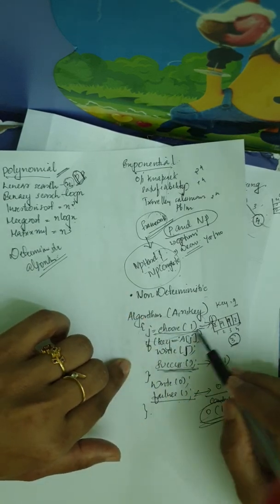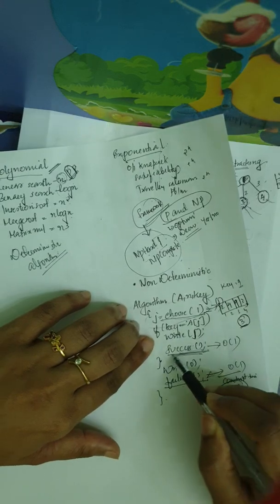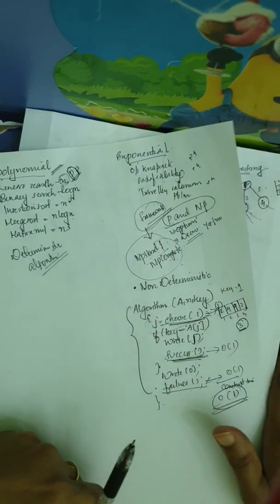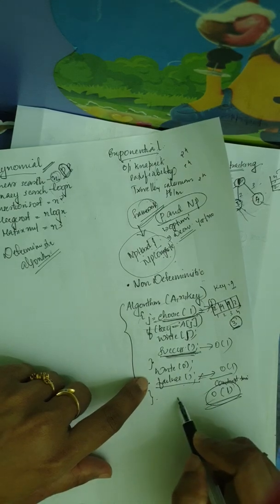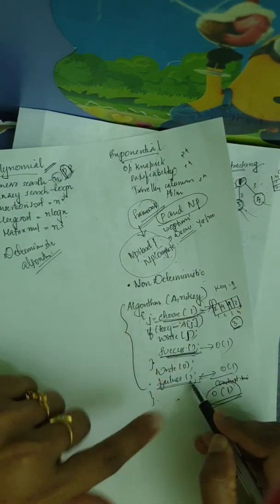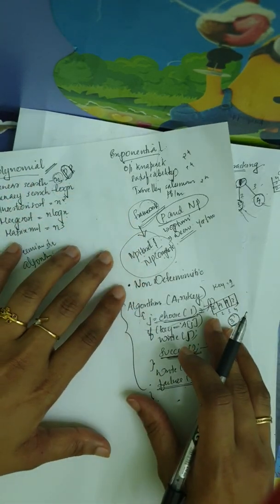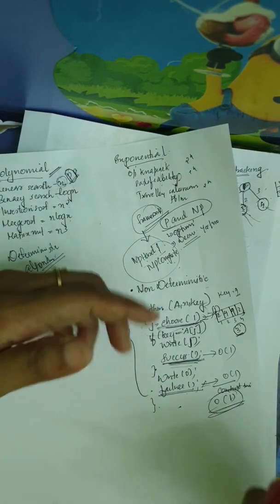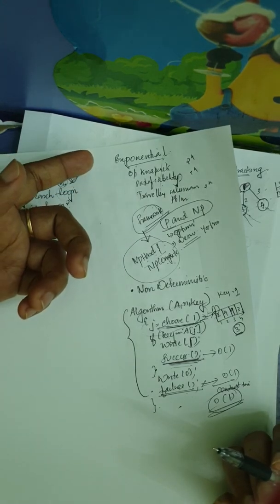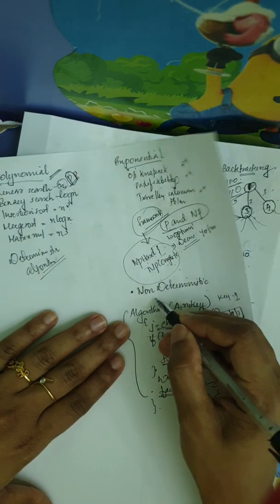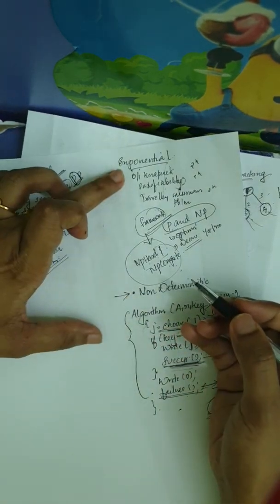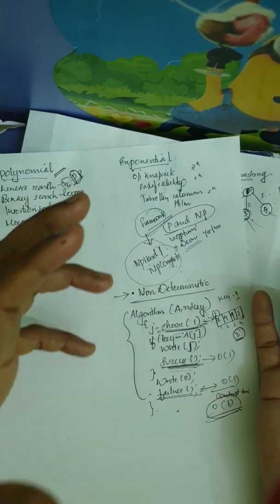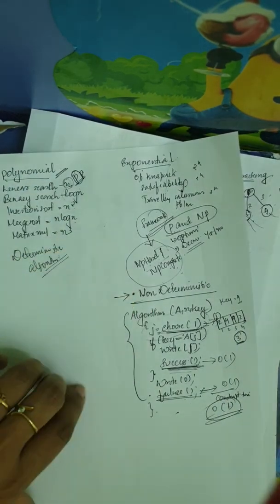We are not concerned about non-deterministic algorithms in isolation. The framework is that we try to convert exponential time into polynomial time by writing non-deterministic algorithms for exponential problems. That is why we try to write down the non-deterministic algorithm — if we can write it down and it executes in polynomial time, that is meaningful.